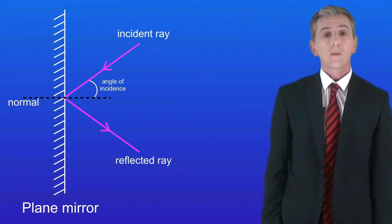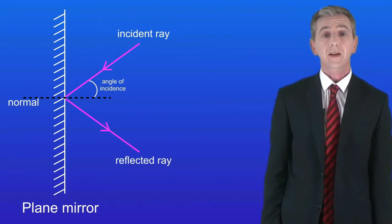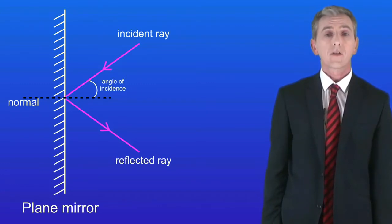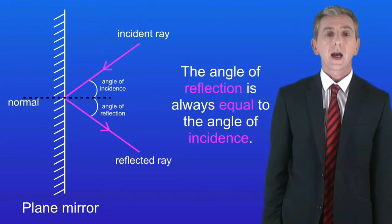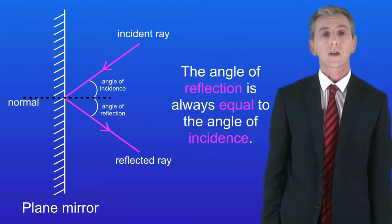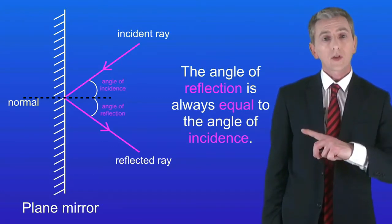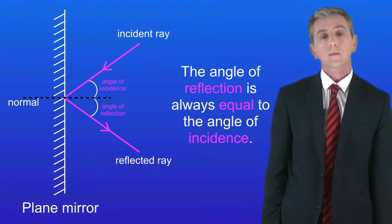The incident ray is reflected off the mirror, and we call this the reflected ray. We can measure the angle between the reflected ray and the normal, and we call this the angle of reflection. The key rule is that the angle of reflection is always equal to the angle of incidence — in other words, these two angles are equal.